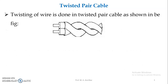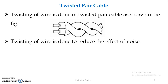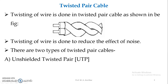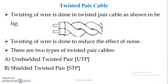Starting with wired communication. For wired communication, we use twisted pair cable, coaxial cable, and fiber optic cable. Starting with twisted pair cable — in twisted pair cables, twisting of wire is done as shown in the figure. This twisting is done to reduce the effect of noise. There are two types: unshielded twisted pair cable and shielded twisted pair cable.